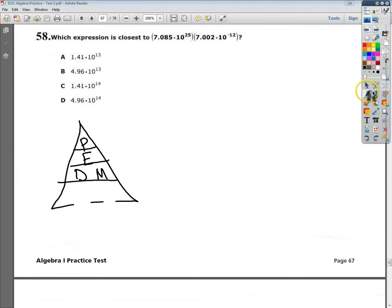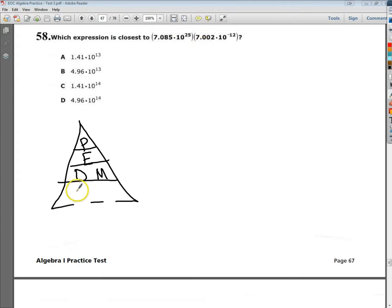Now, the reality is, there is a multiplication of 7.085 and 7.02, so I can sort of treat it that way. What I'm going to end up doing is multiplying this number times this number, and then I'm going to multiply the two terms with exponents together.